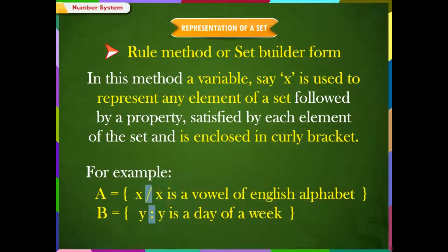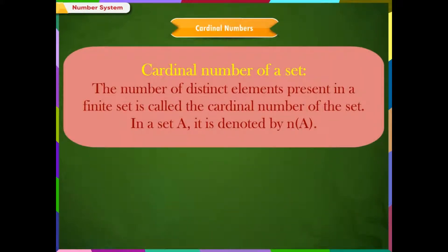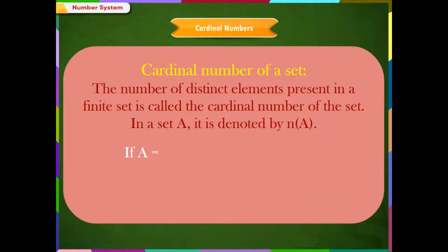These symbols stand for 'such that.' Cardinal number of a set: the number of distinct elements present in a finite set is called the cardinal number of the set. In a set A, it is denoted by N(A). If A is equal to {A, E, I, O, U}, then N(A) is equal to 5.